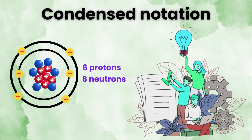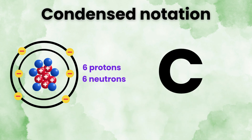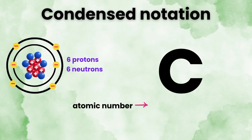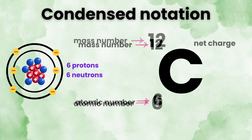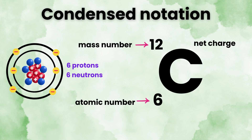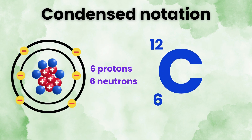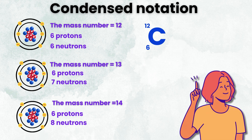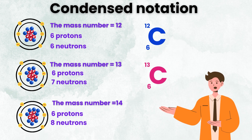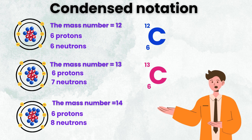The second method is condensed notation. Step one, write the element symbol — C for carbon. Step two, write its atomic number, which is the number of protons, as a left subscript — so number six. Step three, write its mass number, protons plus neutrons, as a left superscript — so 12. Step four, write its net charge as a right superscript. The net charge is zero for an atom, so we can leave that space blank. So it looks like carbon with subscript 6 and superscript 12. We can do the same for the other two isotopes: C-6-13 and C-6-14.